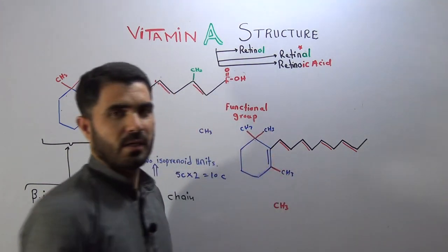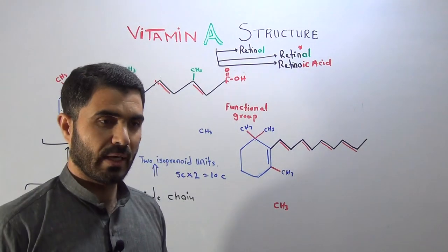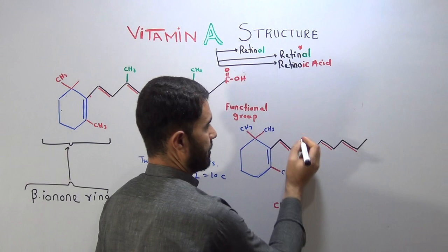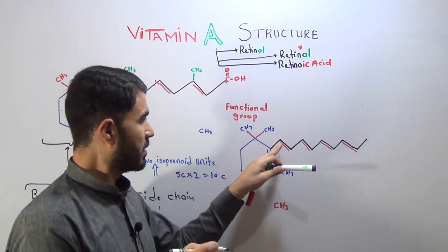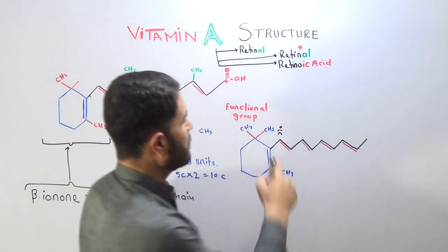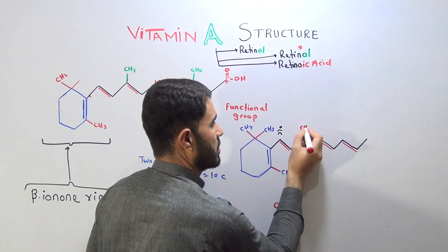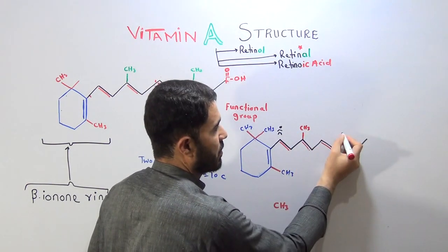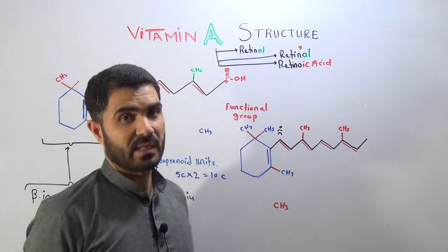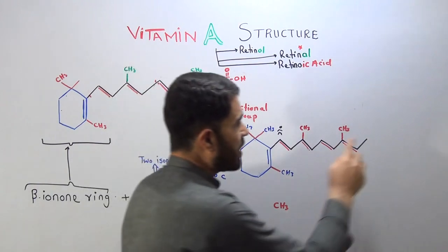Now we have the nine-step zigzag side chain. In this side chain we are going to insert two more methyl groups. If you look at the peaks in the side chain — first peak, second peak, third peak, fourth peak and so on — you will leave the first peak and add one methyl group at the second peak, then leave that peak and add another methyl group further along. So these two methyl groups are placed at alternating peaks in the side chain.